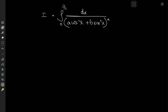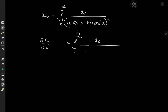I'm going to define this as I sub n, which is going to come in handy quite a bit very soon. I'd like to differentiate the integral with respect to its parameters. So we have partial I sub n over partial a equal to — differentiating because of the power rule, we should have negative n — integral from 0 to pi over 2 of dx over (a cosine squared x plus b sine squared x) to the n plus 1.